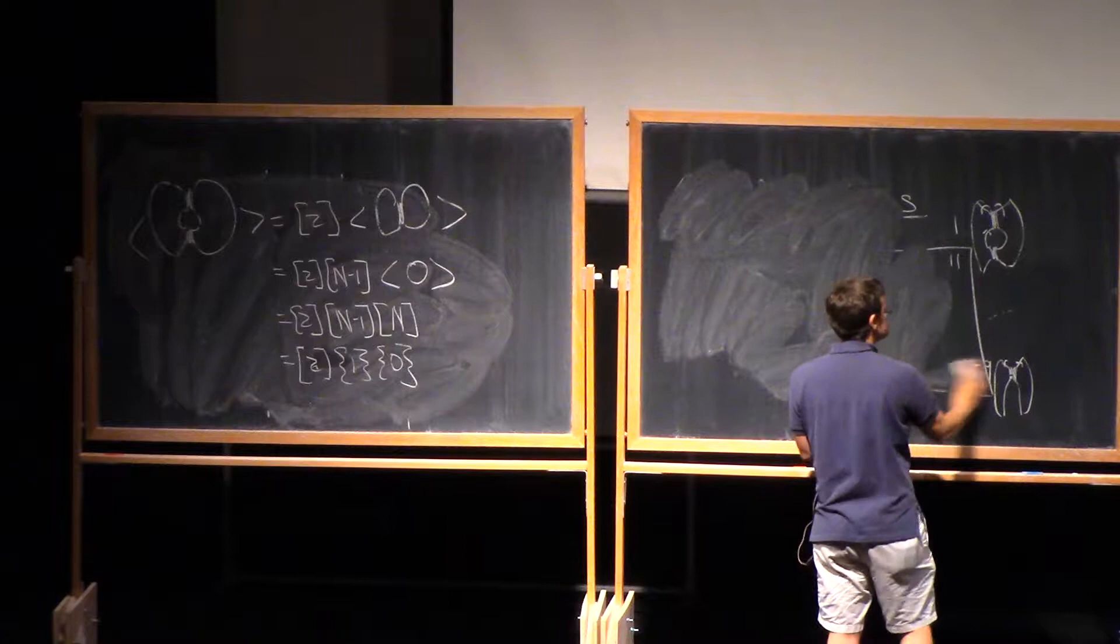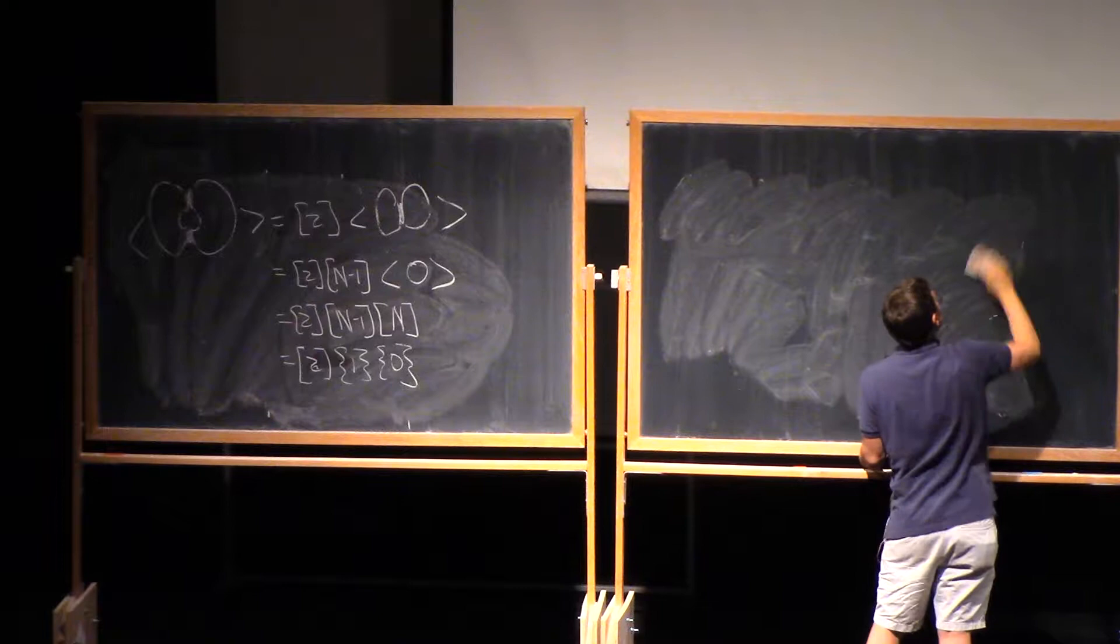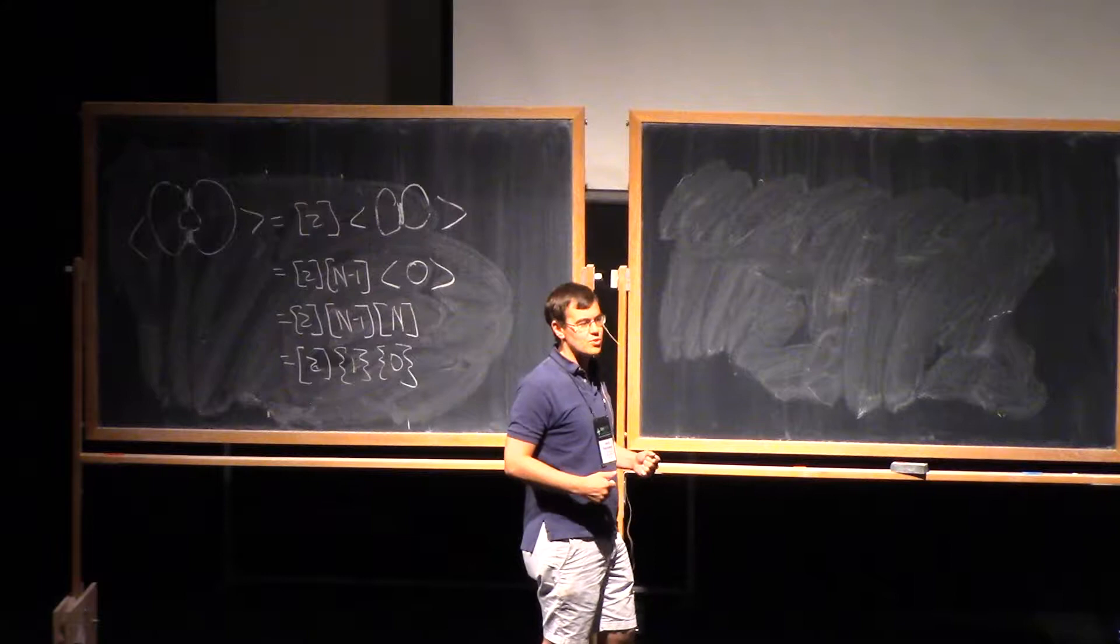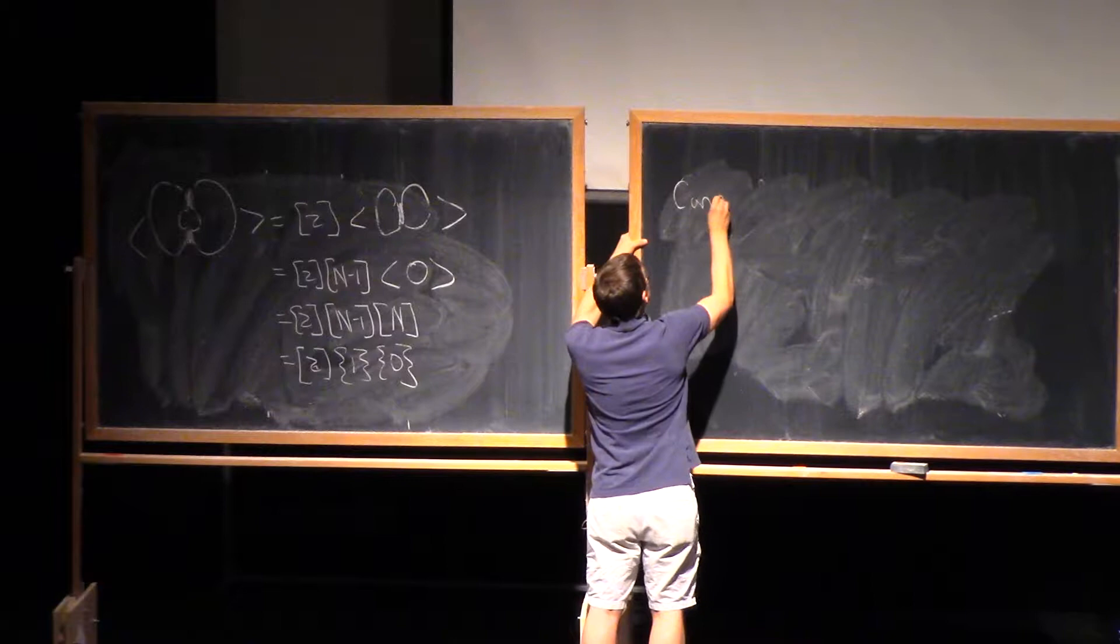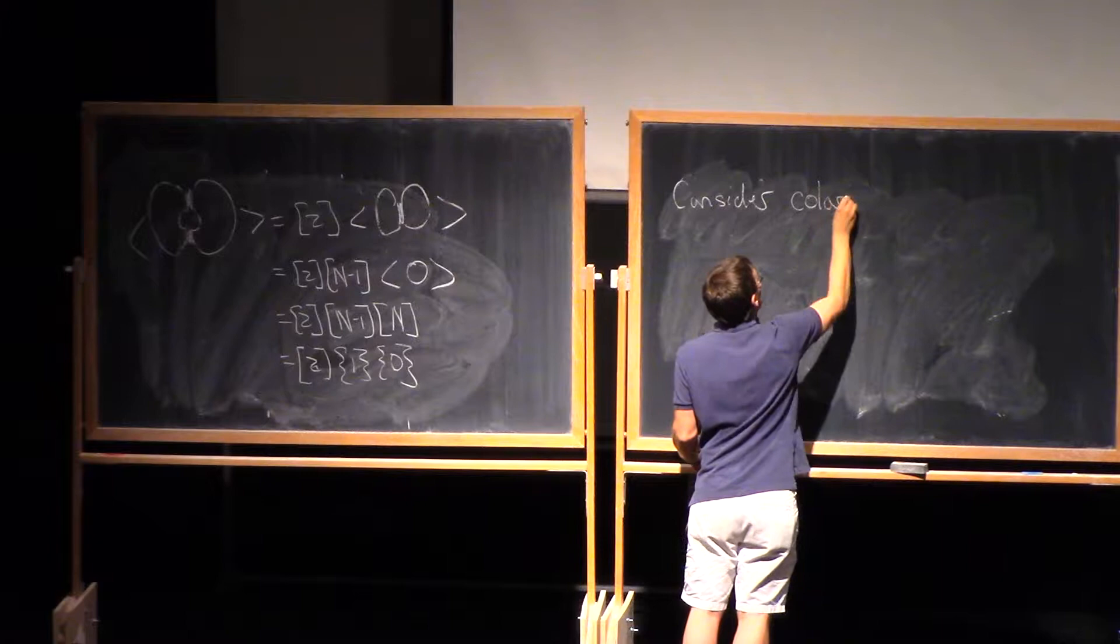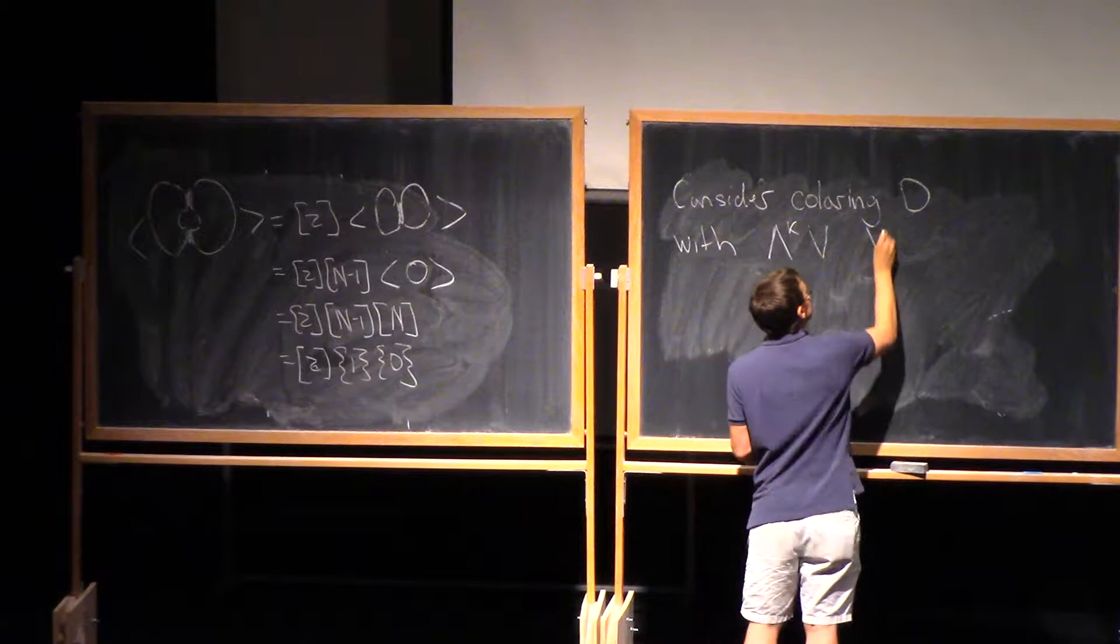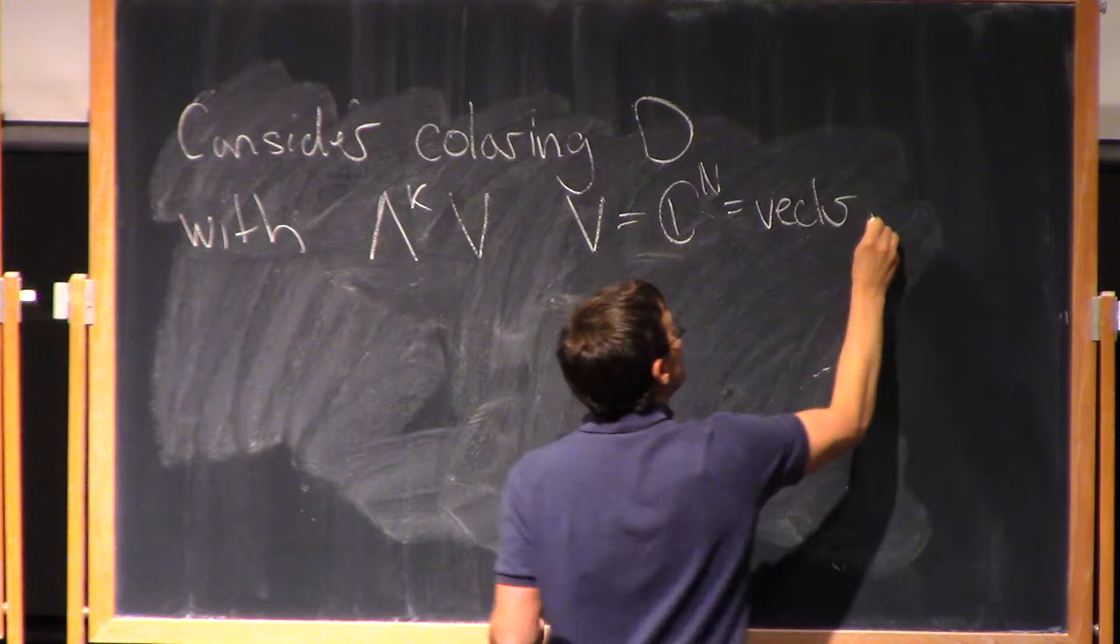So now we'd like to talk about colored polynomials and it turns out that the situation is much better for colors that live in, colors that are exterior powers of the vector representation. So for now, let's consider coloring my diagram D with, let's say, lambda to the k of v, where again, v is cn is the vector representation of sln.